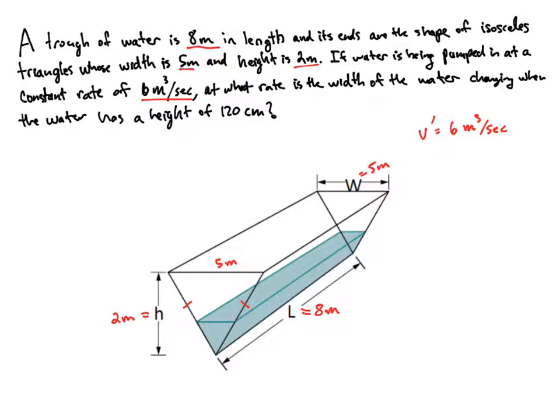At what rate is the width of the water changing when the water has a height of 120 centimeters? So when we're saying at what rate is the width of the water changing, we're wondering how is the width changing. But really it's the width down here. How is this changing? So we're going to call that W prime. So that's what we're trying to find out here.